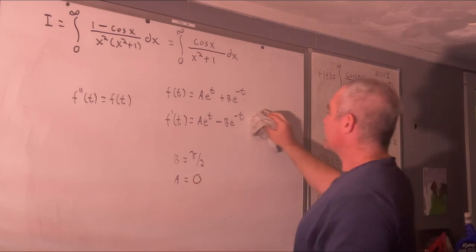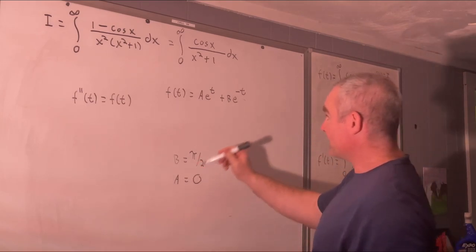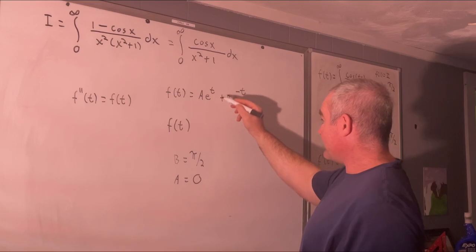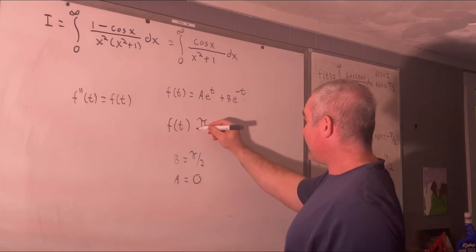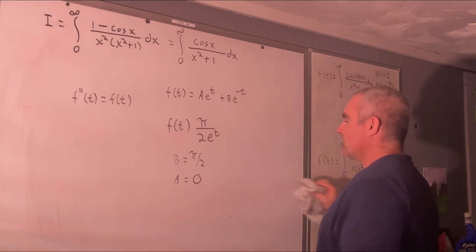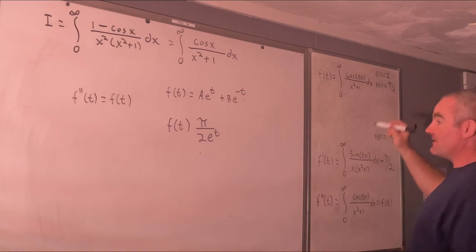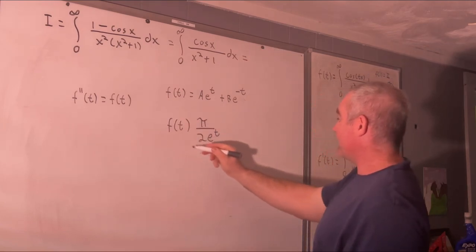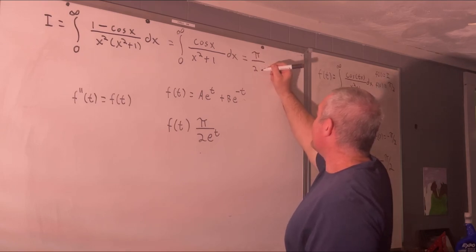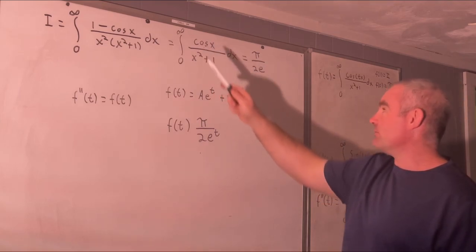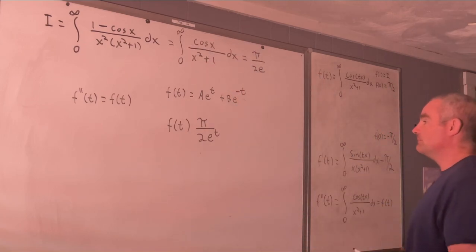So f(t) = (π/2)e^{-t}. Going back to f(1) = i, we get i = π/(2e). I made a mistake in my original assertion that it was π/e — it's actually π/(2e). Note that the integral from negative infinity to infinity of cosine(x)/(x² + 1) dx is π/e.